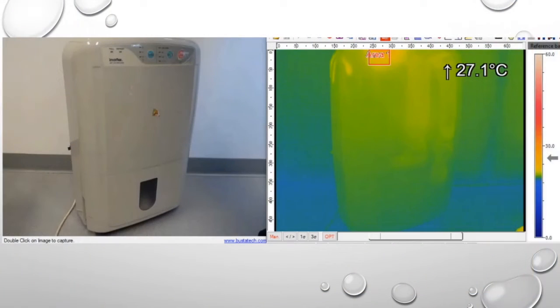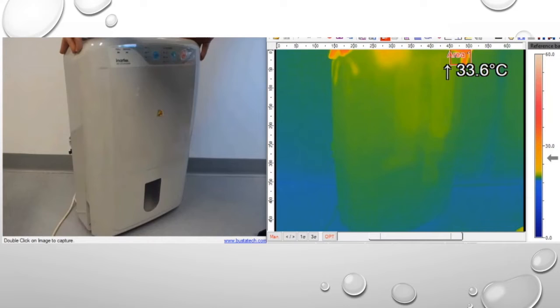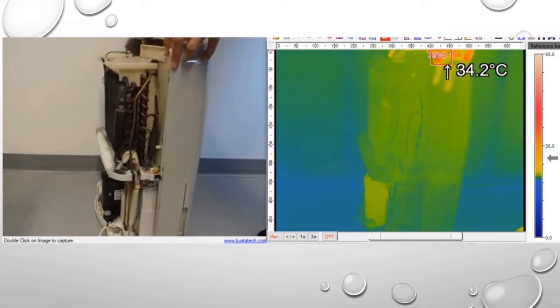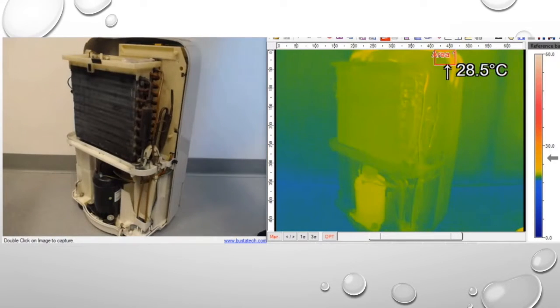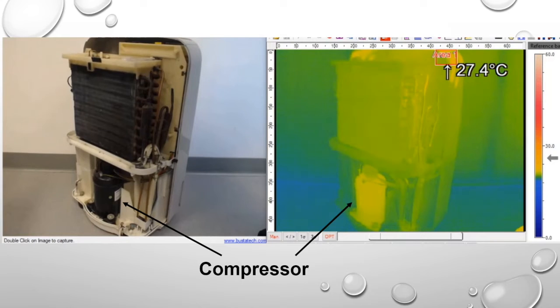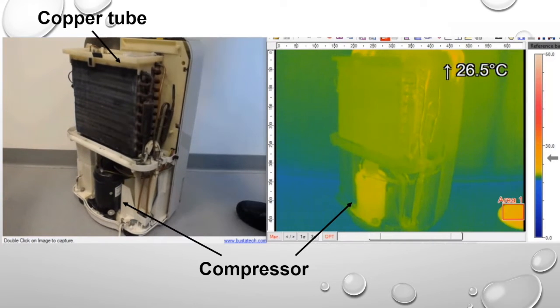Let us first take a look and see what is inside a common dehumidifier we can find at home. If we open the cover, we will see that there is a compressor at the bottom and a winding tube made of copper on top. There are actually two parts to the copper tube.